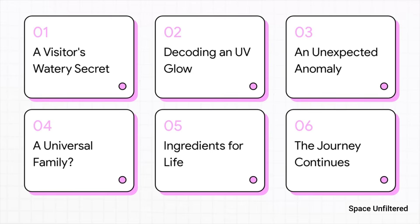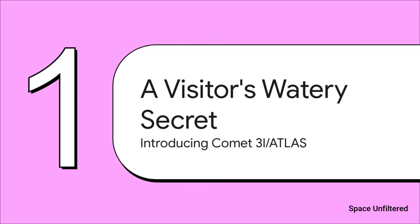Here's what we're going to cover. We'll start with the visitor's secret itself, then decode the ultraviolet glow that gave it away. We'll look at an unexpected anomaly and then ask if this points to a universal family of comets. After that we'll touch on the big one, the ingredients for life, and finally we'll see what's next on this comet's journey.